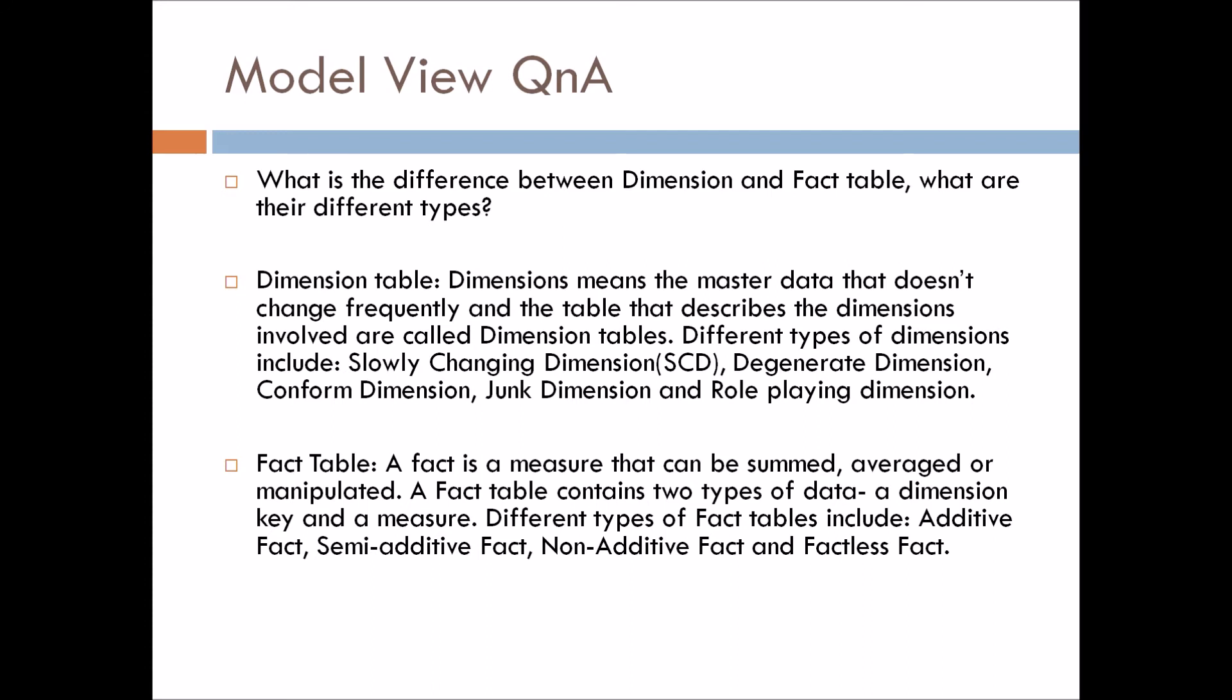Dimension tables: Dimension means the master data that doesn't change frequently, and the table that describes the dimensions involved are called dimension tables. If you talk about the types, we have five types of dimension tables: slowly changing dimension, degenerate dimension, conform dimension, junk dimension, and role playing dimensions. They might also ask you about these categories, so I would recommend you to just Google these types and prepare one or two lines for them also so that you can answer it in the interview.